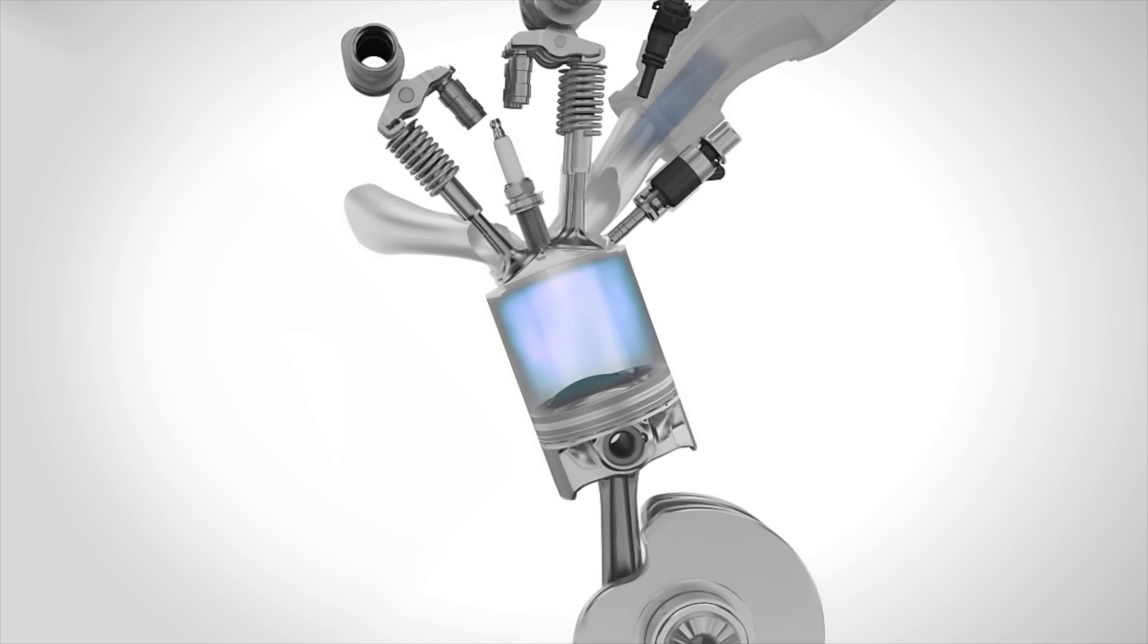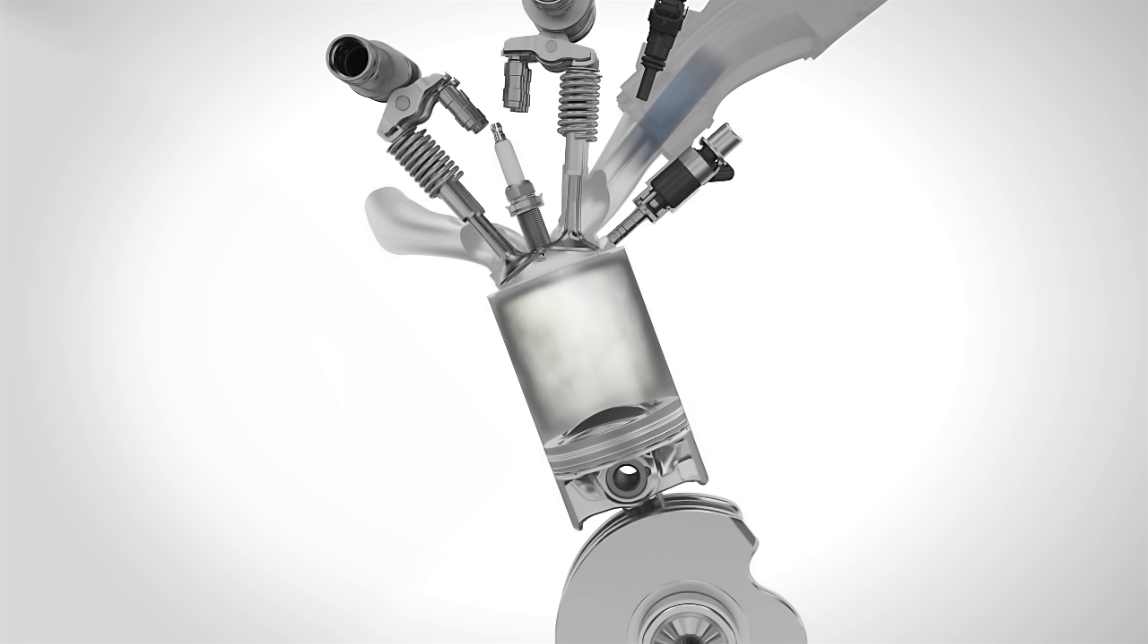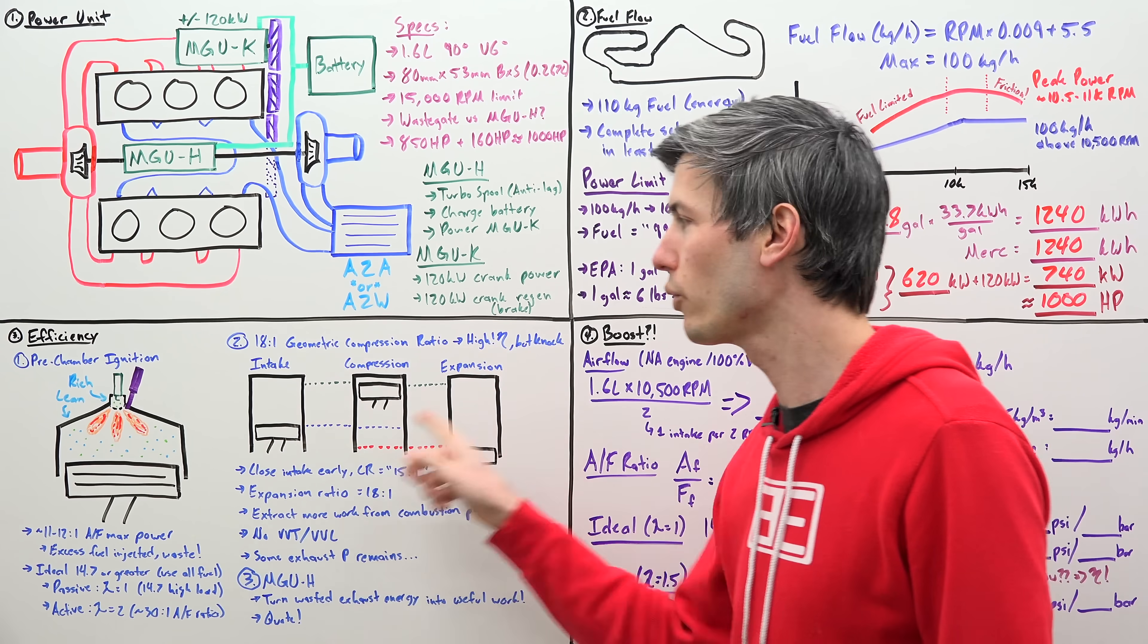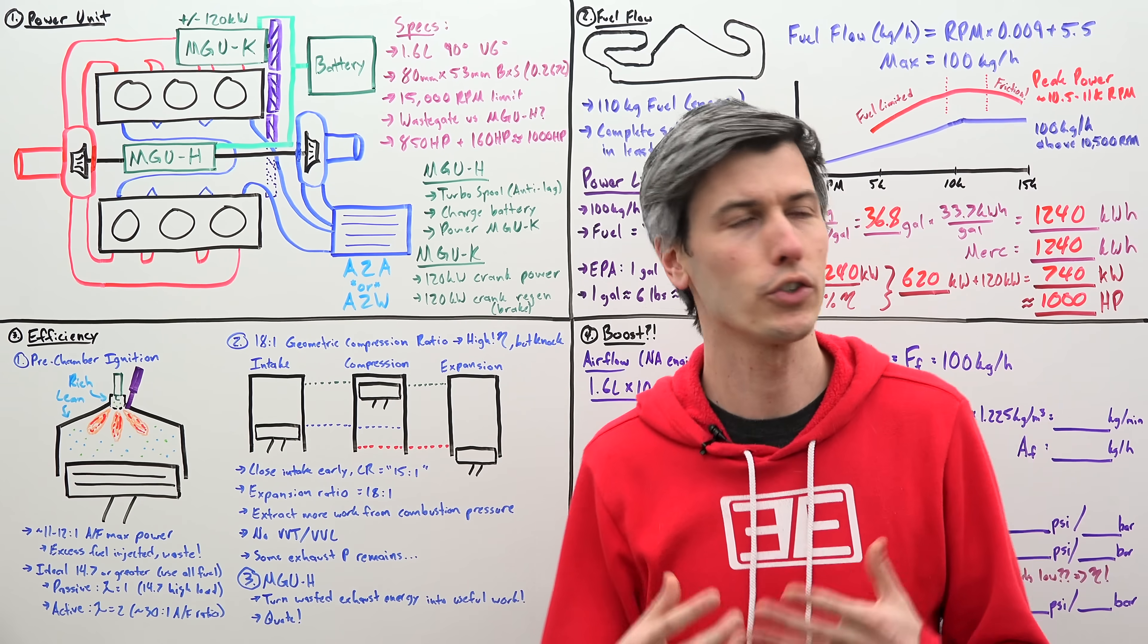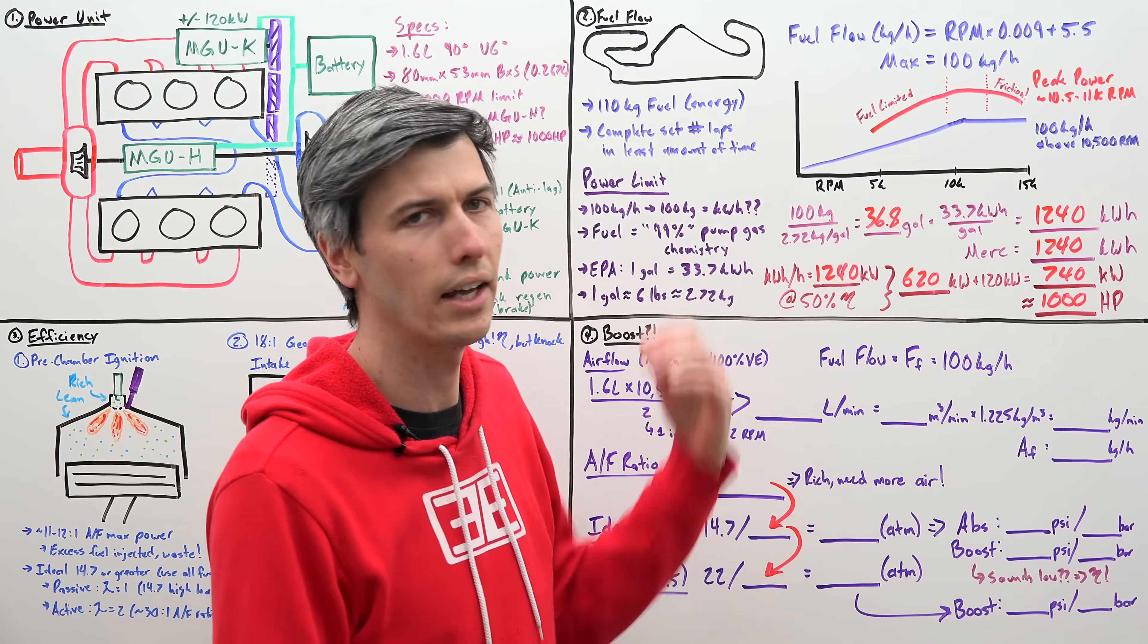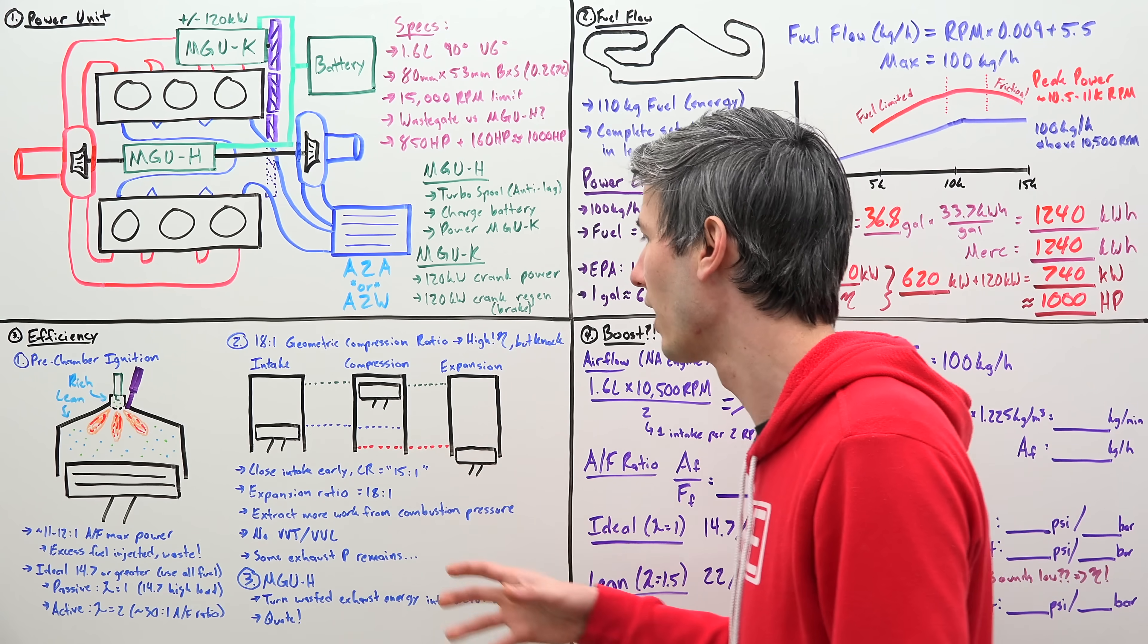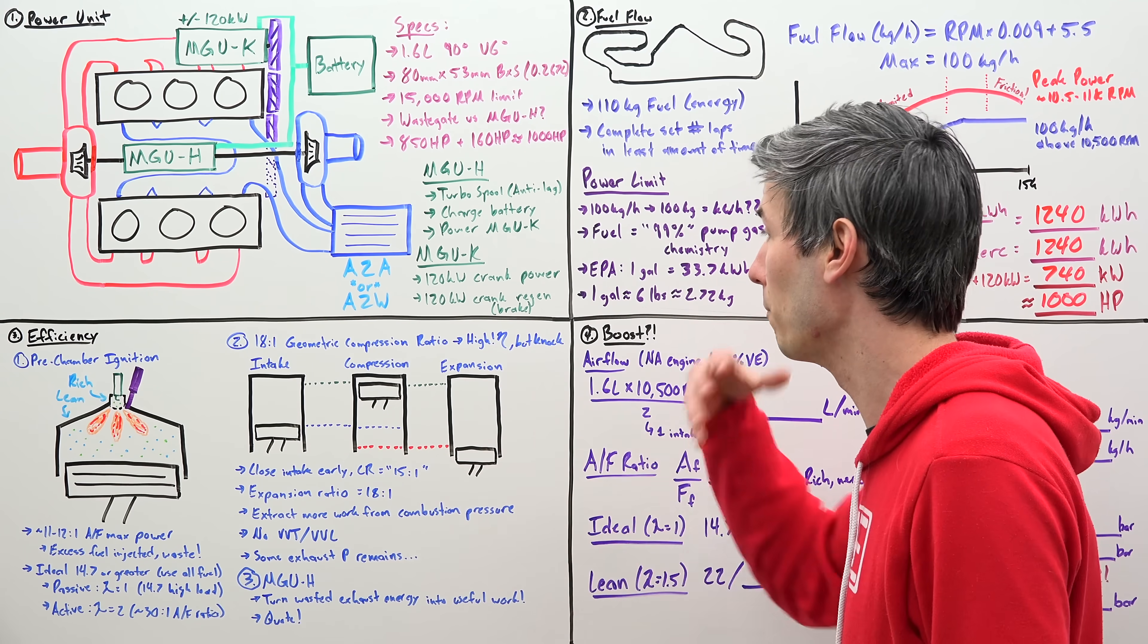Now, it is worth mentioning that within Formula 1, there is no variable valve timing, there is no variable valve lift. So, whatever you choose to do, it is set. So, you're typically going to probably choose an RPM, 10,500 RPM, 11,000 RPM, something like that, to have your most efficient operating point, as far as the design for the engine of making power.